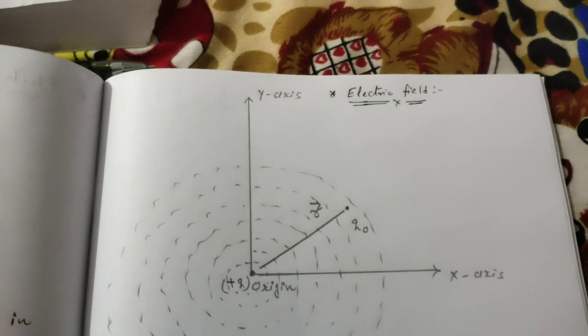Before proceeding towards electric field, let us do one experiment. I have two magnets — a cylindrical magnet which I am placing at the center of the book. Now you can see that while I just put one magnet near to this magnet, it is displaced easily, but there is no physical contact between these two magnets. In that case also, this magnet is displacing — attraction or repulsion phenomena occur.